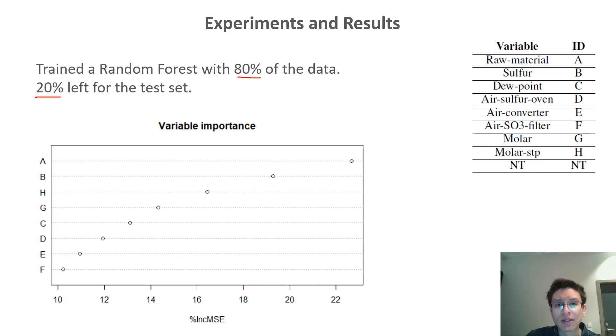In the x-axis, we have the percentage of increase in mean squared error. In this case, for example, if we remove variable A, the error is expected to increase approximately 22%. On the other hand, if we remove variable F, the error will increase just by 10% when predicting the NT value.